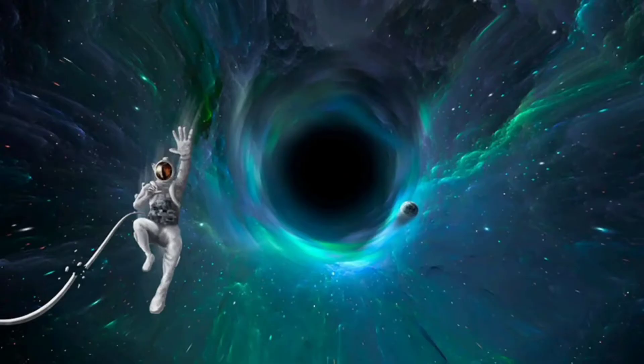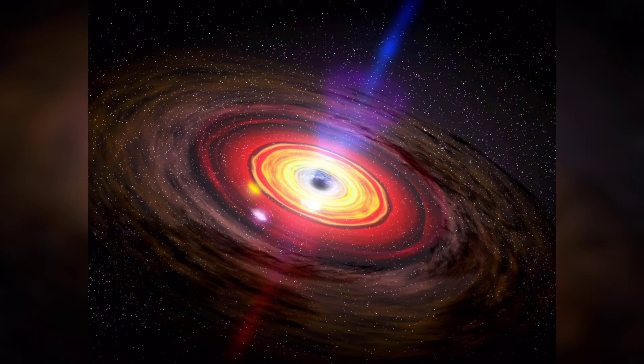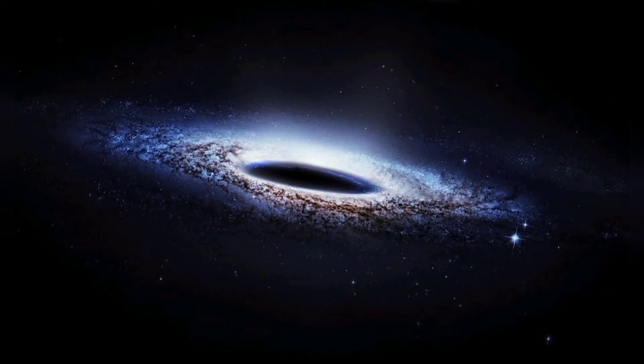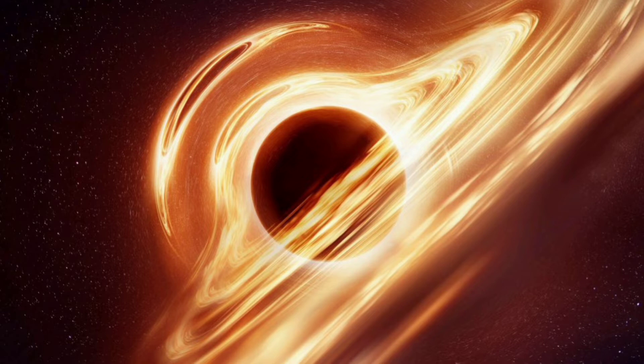What is a black hole? A black hole is a place in space where gravity pulls so much that even light cannot get out. The gravity is so strong because matter has been squeezed into a tiny space. This can happen when a star is dying.